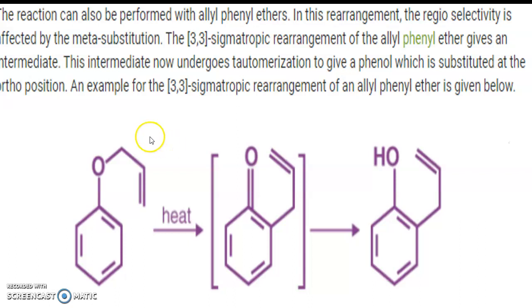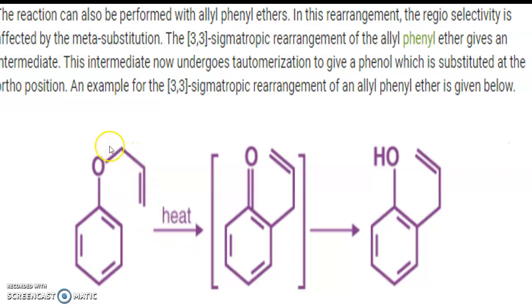We will see some examples of Claisen rearrangement. Here, this system is a phenyl system and this is the allyl system, so the name of this starting material is allyl phenyl ether. If we subject this allyl phenyl ether to heat, there is formation of a product via 3,3 sigmatropic rearrangement. Numbering the groups 1, 2, 3 and 1, 2, 3, we get this rearranged product. This is again an example of sigmatropic rearrangement.